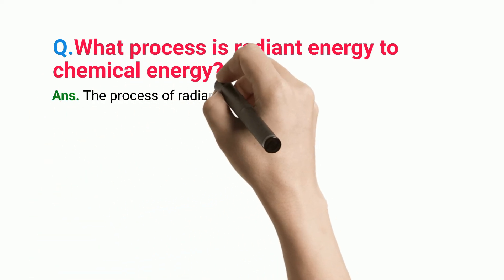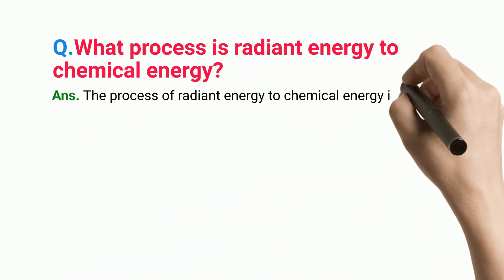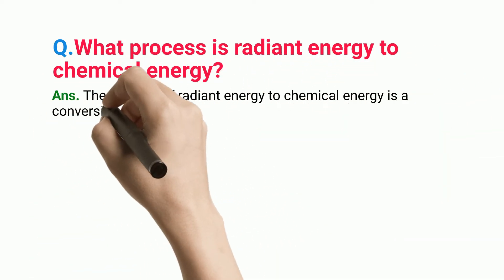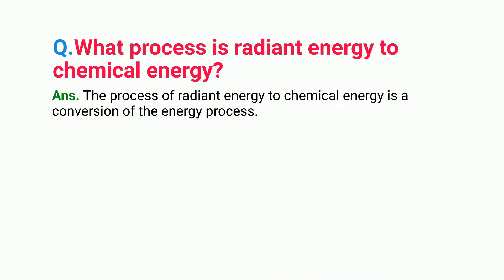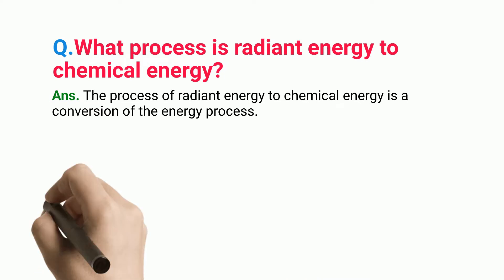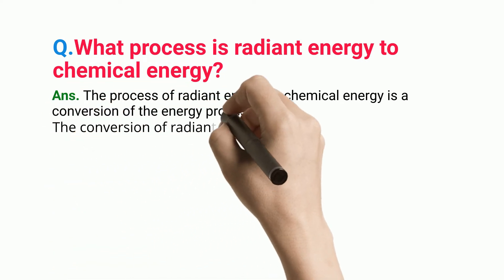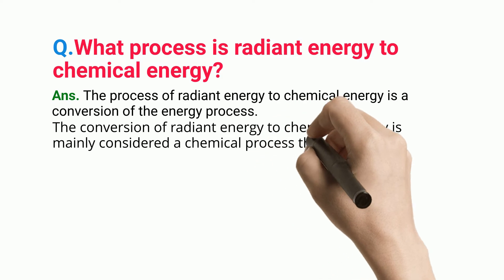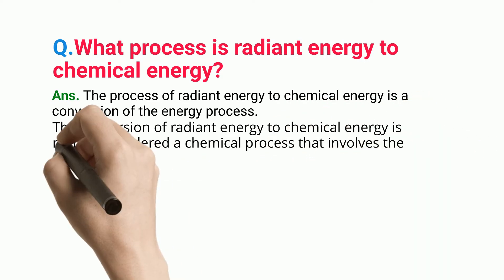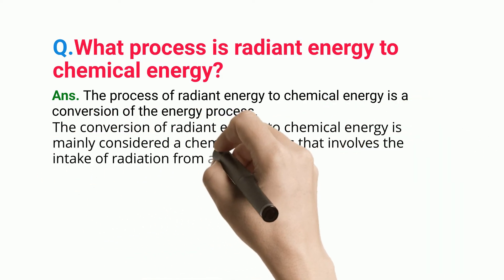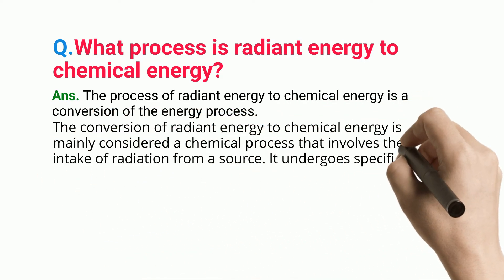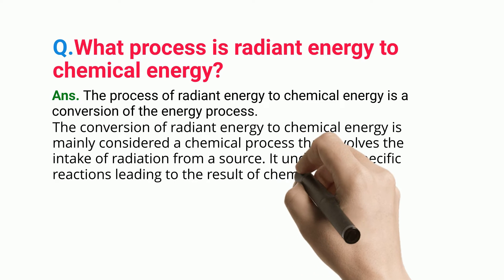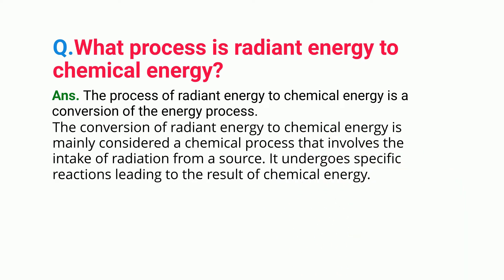The process of radiant energy to chemical energy is a conversion of the energy process. The conversion of radiant energy to chemical energy is mainly considered a chemical process that involves the intake of radiation from a source. It undergoes specific reactions leading to the result of chemical energy.